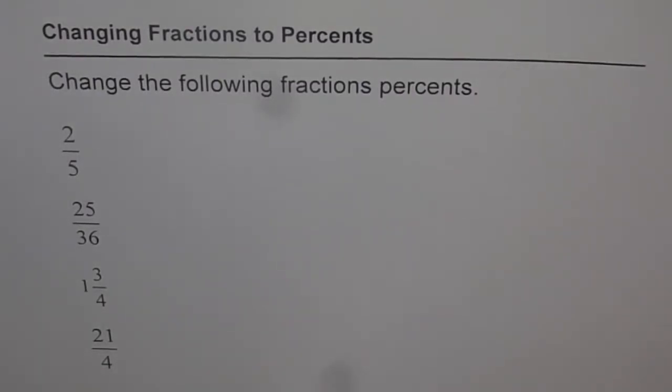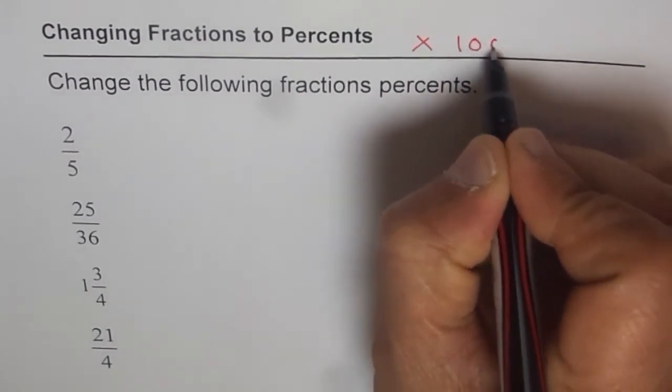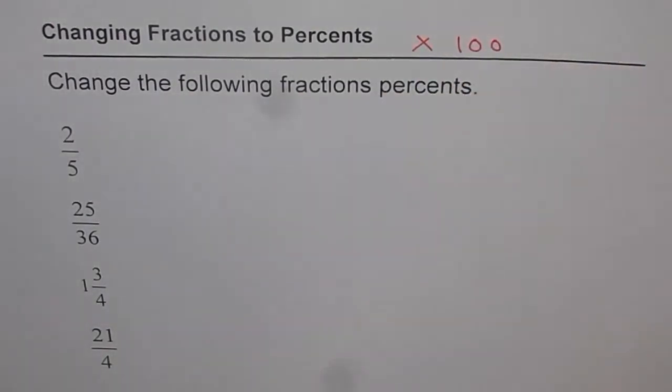Changing fractions to percent, as we saw earlier with decimals, changing to percent is times 100. That is what it is. So always, whenever you are changing to percent, you times it with 100. That's the rule.